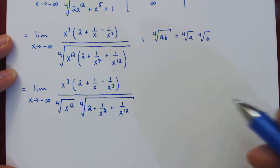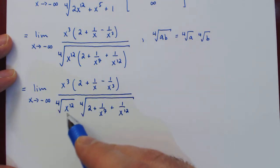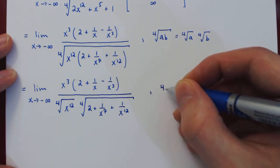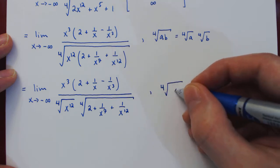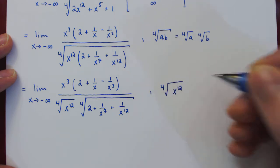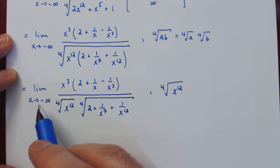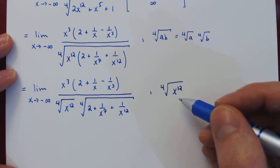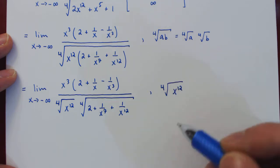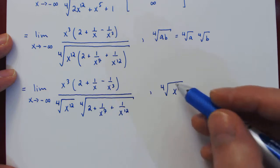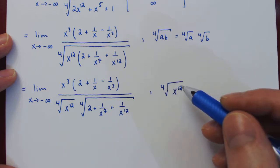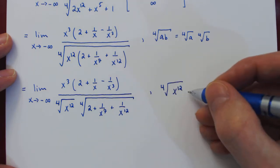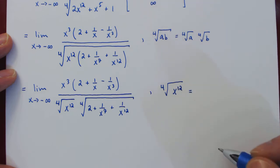And here we have to be careful in simplifying the fourth root of x¹². So as x goes to negative infinity, x is obviously negative. But then the 12th power of a negative is positive, and the fourth root of a positive is also positive. So what will come out of this has to be positive.